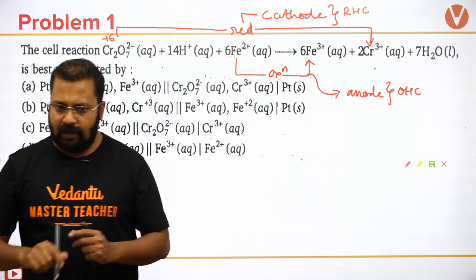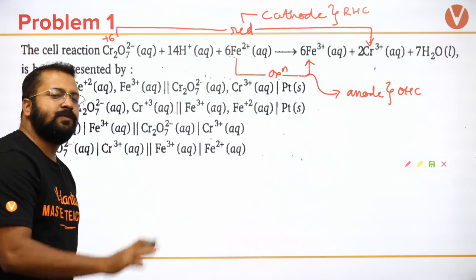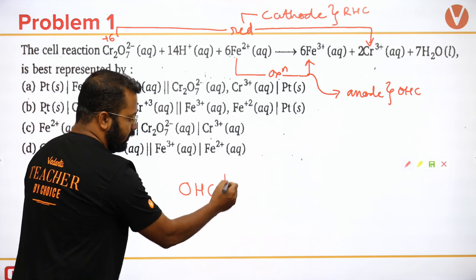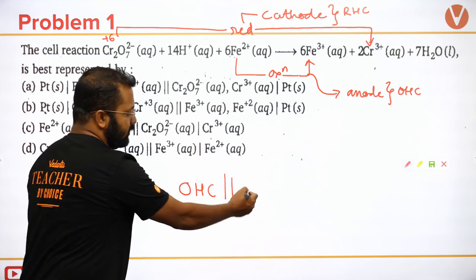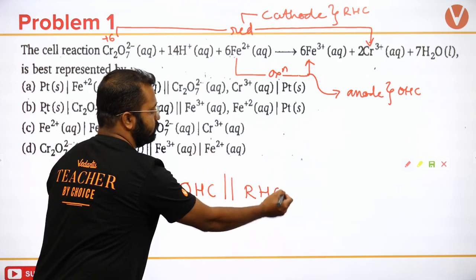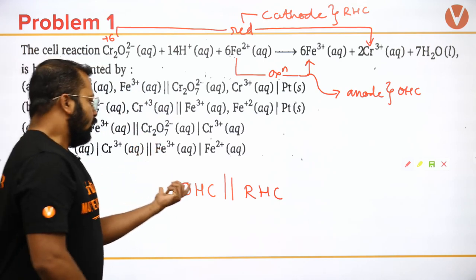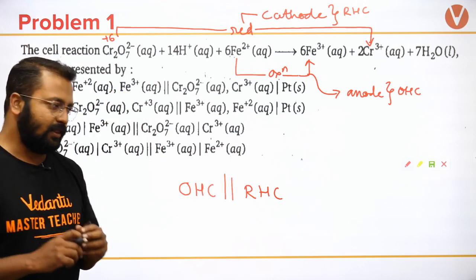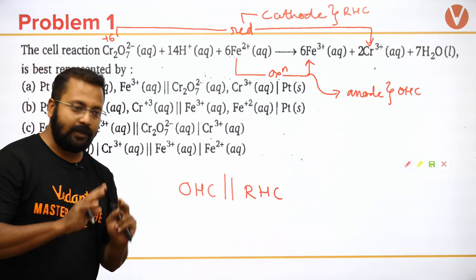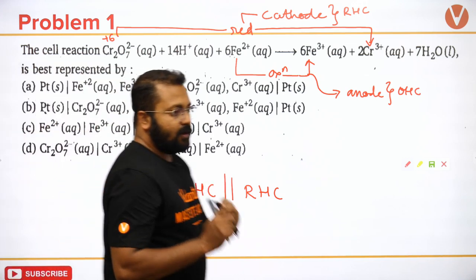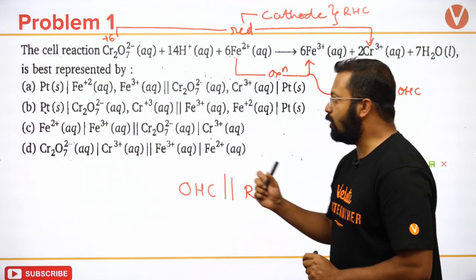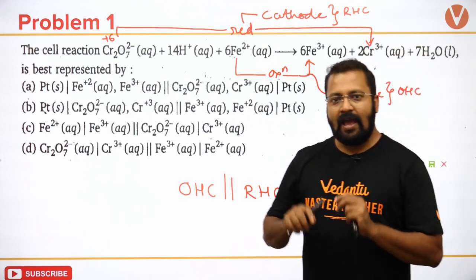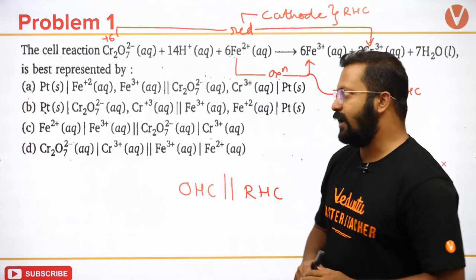Whenever we do a cell representation, the format is: oxidation half cell | | reduction half cell. That means the oxidation half cell is written on the left with two vertical lines, and then the reduction half cell. So ideally, iron should be on the left hand side and dichromate should be on the right hand side.